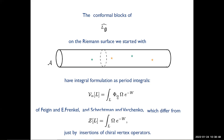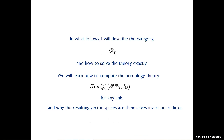You're asking why this is a vector and what kind of vector it is. The rank is the size of the corresponding weight space — the zero-weight subspace of the tensor product of representations of either G or the corresponding quantum group. In what follows, I'll describe this category and how to solve it exactly, how to compute the resulting homology theory for any link, and why the resulting vector spaces are themselves link invariants.